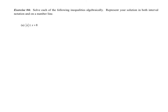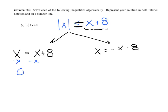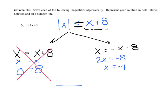Exercise four. Solve the absolute value of x is less than or equal to x plus eight. The absolute value is by itself, so I write two equations. The first: x minus x equals zero, giving zero equals eight — that doesn't make sense, so we reject that side. The second: adding x gives two x equals negative eight, so x equals negative four. There's only one number to put on the number line.